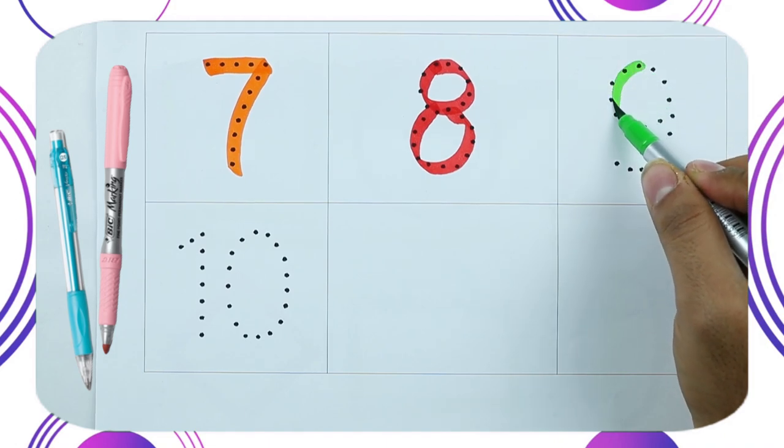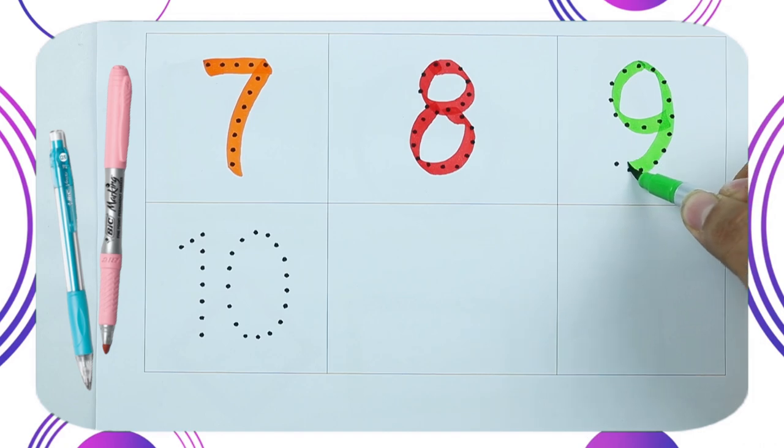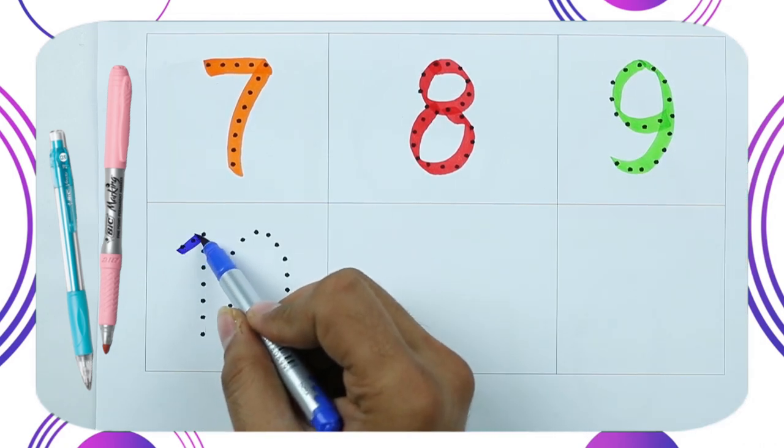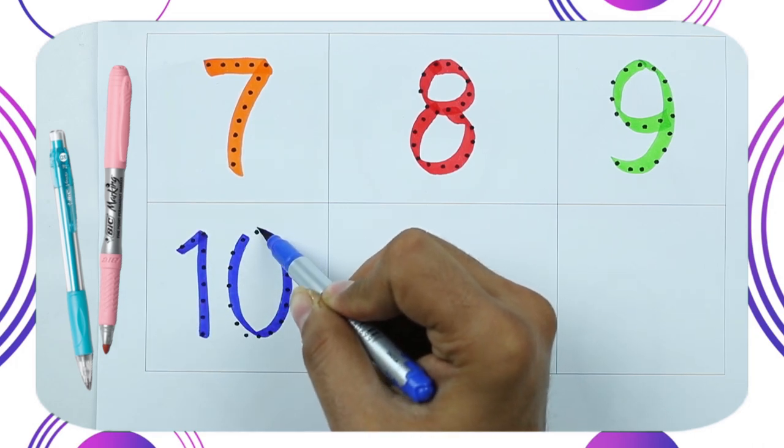Number 9 with green color. It's number 9. Number 10. Number 10. 1 and 0. It's number 10.